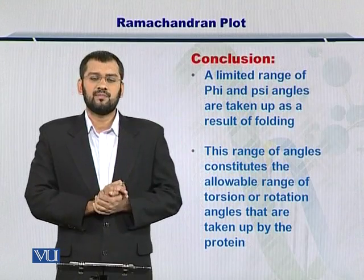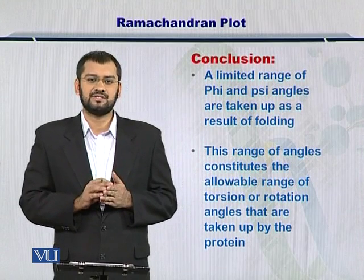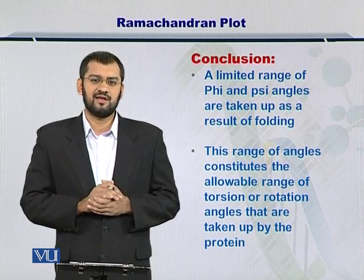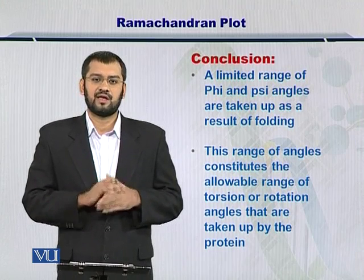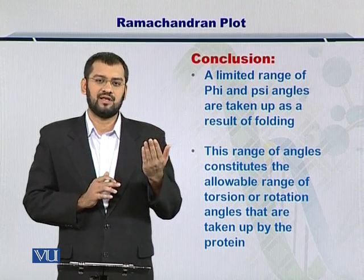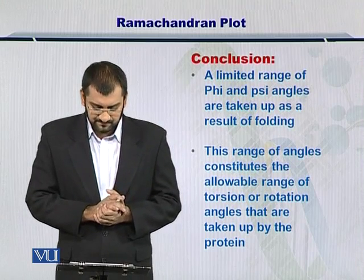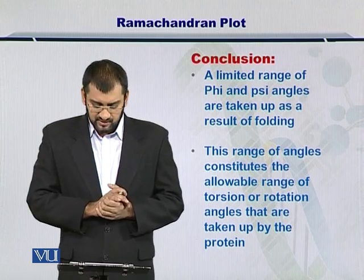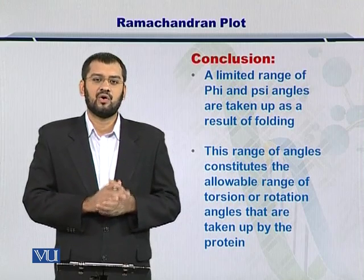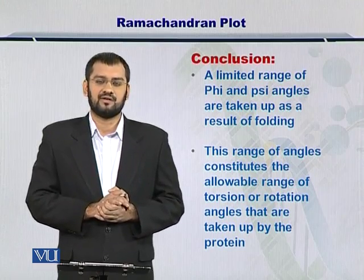In conclusion, the take-home message is that the Psi and Phi angles have a very limited range in real, biologically viable proteins. Interestingly, these Phi and Psi angles can be classified as belonging to an alpha helix or a beta sheet — the secondary structures discussed earlier. This range of angles represents the only allowable torsion angle range, or the only conformation in which a protein can actually exist.